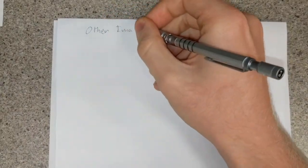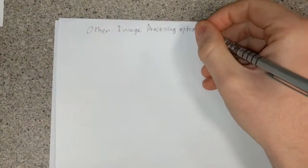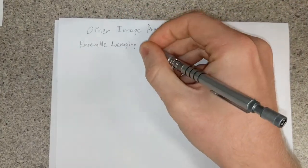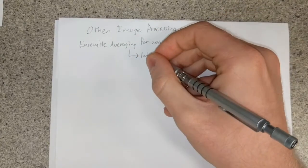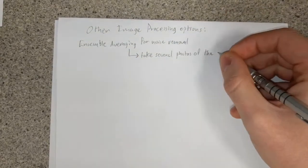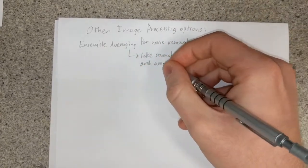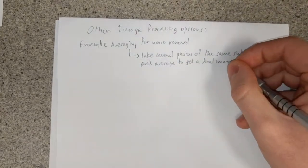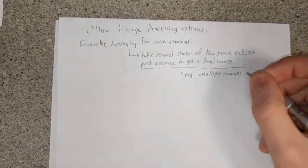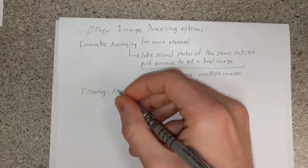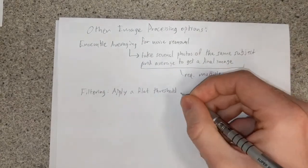Other, more complex methods do exist for handling image artifacts. Ensemble image averaging removes noise by averaging the values across several images. This, however, does require that we have multiple images of the same subject, which is not required by morphological operators.